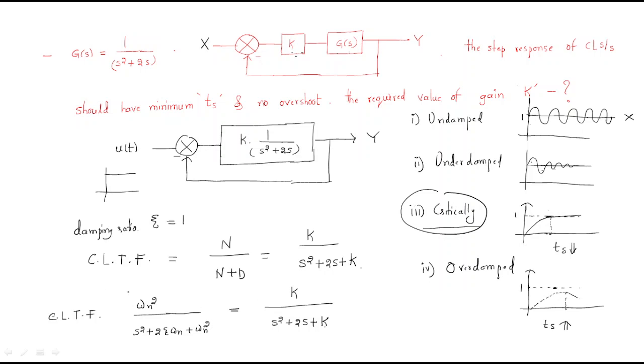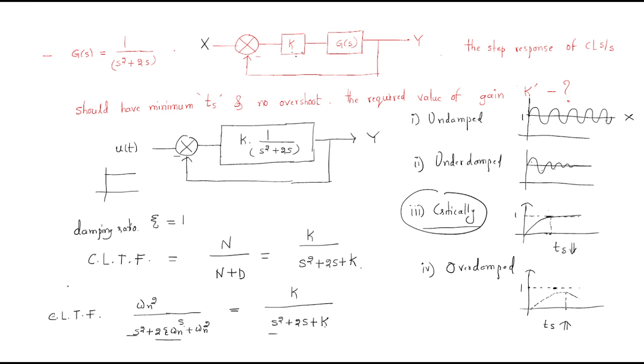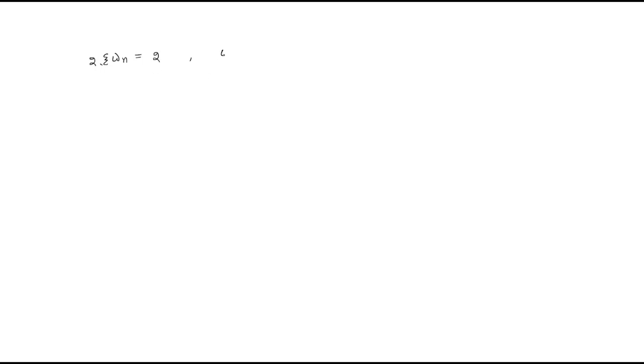Comparing both transfer functions: the s² terms match. From the s coefficient: 2ζωn = 2. From the constant term: ωn² = K. So ωn = √K.